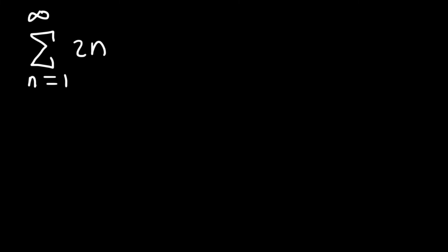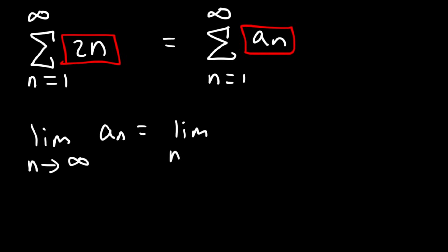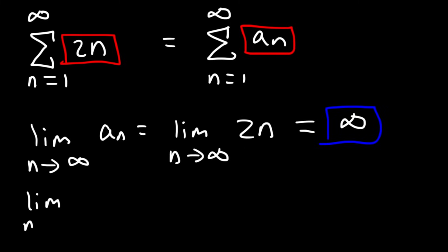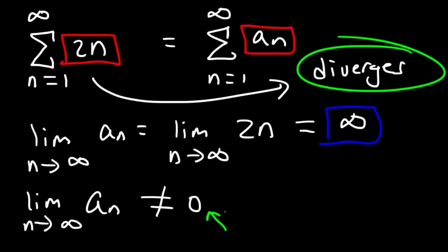Let's use the divergence test on the first problem. a sub n is 2n. The limit as n approaches infinity of 2n does not equal zero — 2 times infinity equals infinity. Since the limit as n approaches infinity of a sub n does not equal zero, we can say the series diverges. It's a quick way to determine divergence.